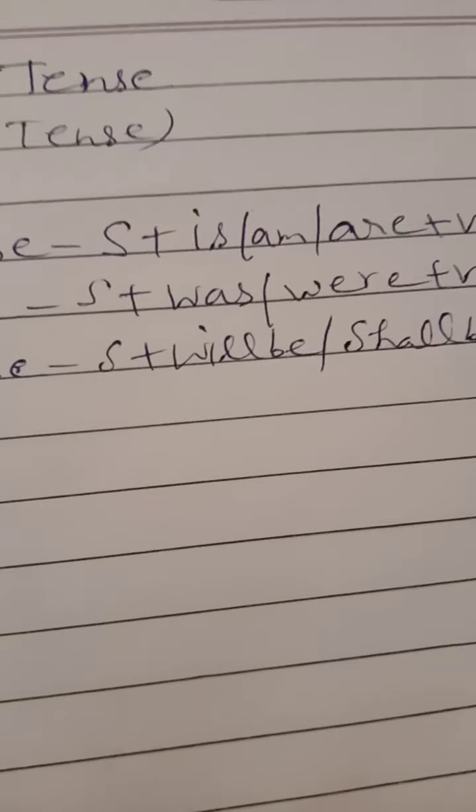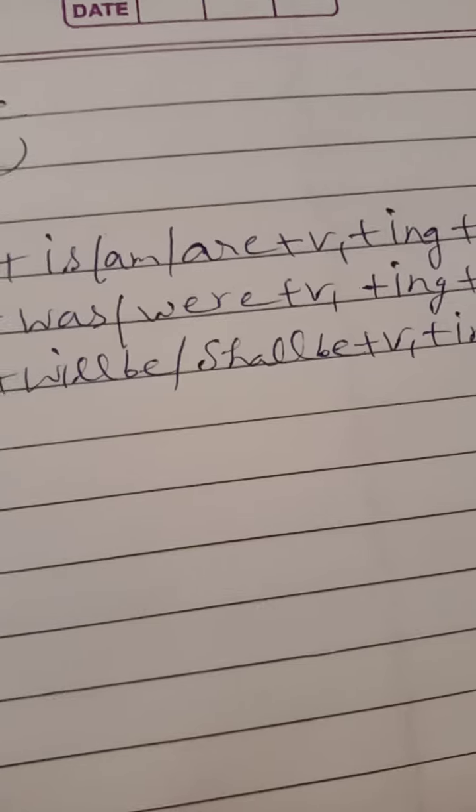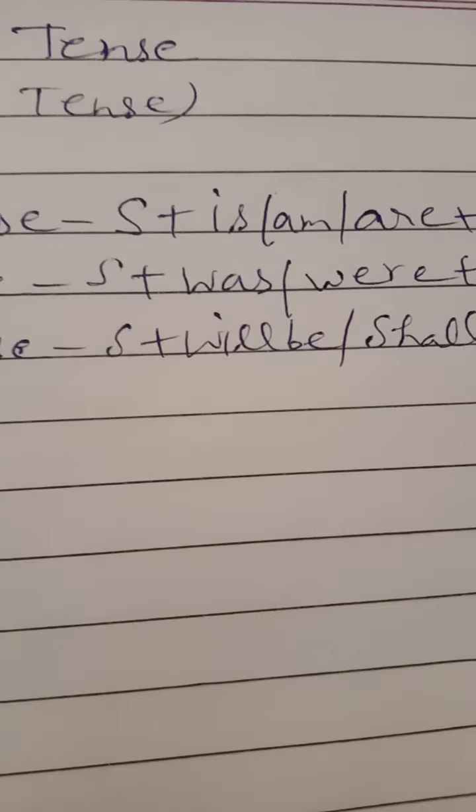In future continuous tense, we have subject, will be/shall be, plus V1, plus ing, plus object.